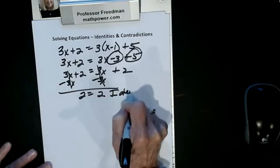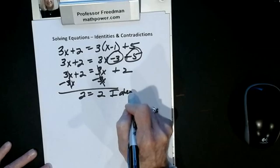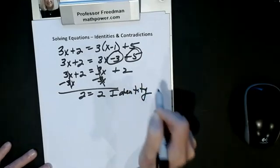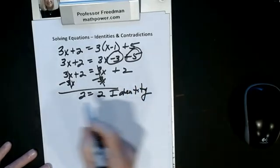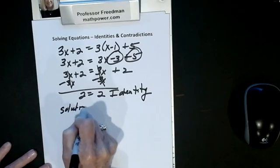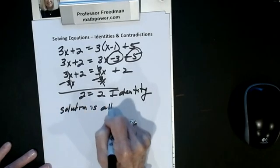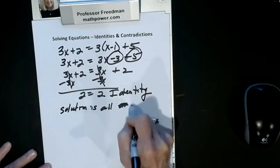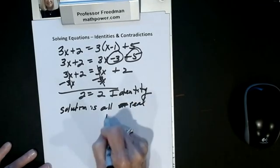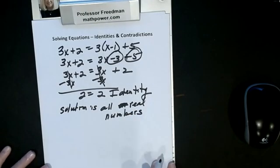All my x's cancel out and I have something equaling itself, so this is called an identity. The solution is all real numbers.